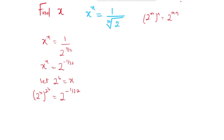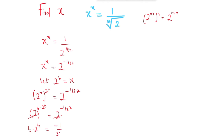So here, we bring out b and multiply by 2 raised to power b, which is the same thing as 2 raised to power negative 1 over 32. Since we have the same base 2, we can bring down the power, giving us b multiplied by 2 raised to power b equals negative 1 over 32.